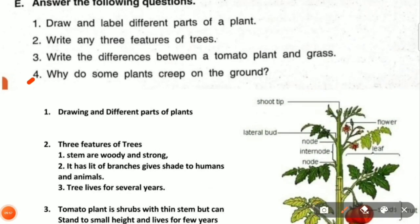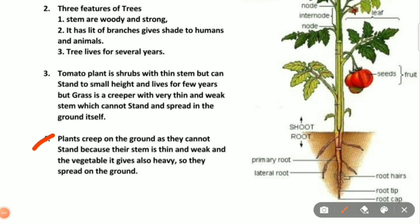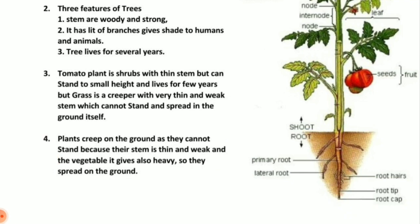Fourth question: why do some plants creep on the ground? Plants creep on the ground because their stem is thin and weak, so they cannot stand. Creeper plants' stems are very thin and weak, and the vegetables they bear are also heavy — for example, pumpkin and watermelon. So they spread on the ground.